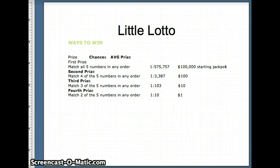Here's one other example, the Little Lotto. These are the odds posted on the website. If you match all five numbers in order, you can win $10,000 and your odds are 1 out of 575,757. Your chances of winning 100 are 1 over 3,387. Chances of winning $10, 1 out of 103. Chances of winning 1, 1 in 10.